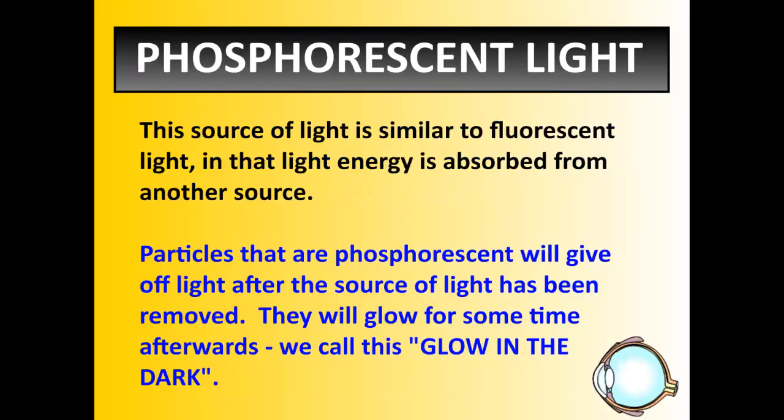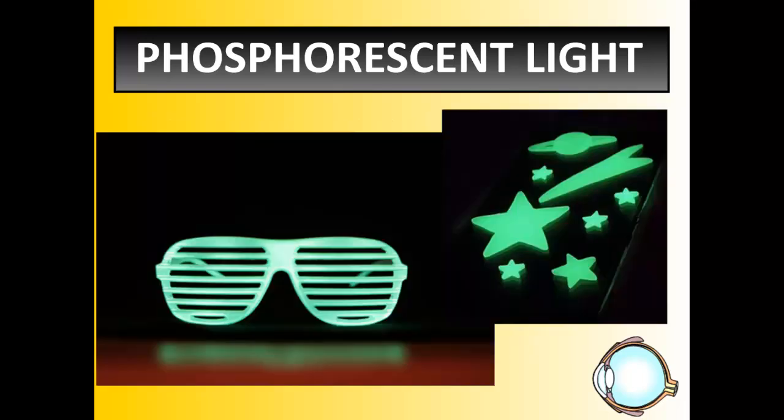The third type of light is phosphorescent light, which is very similar to fluorescent in that energy is absorbed. If you have a piece of phosphorescent material, light particles from a light source will be absorbed by the phosphorescent material, and then when you remove the light, the phosphorescent material will glow. These are glow-in-the-dark stickers or stars that you see on your walls. The phosphor inside these items — the same type of phosphor that's in a fluorescent bulb — absorbs light energy, and then when you take away the light and put it in a dark room, it gives off light energy. That's phosphorescent.